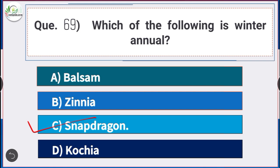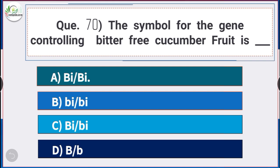Question number 70: The symbol for gene controlling bitter-free cucumber fruit is — answer option E — capital B small i bar (Bi).